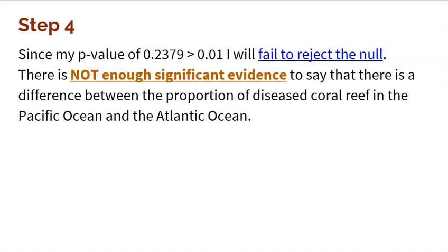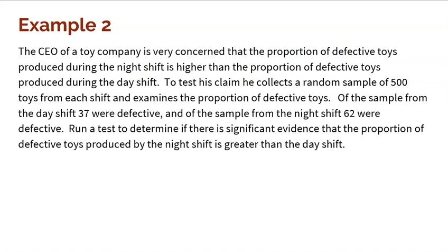Now we're going to move on to the second example. The CEO of a toy company is very concerned that the proportion of defective toys produced during the night shift is higher than the proportion of defective toys produced during the day shift. He gets 500 toys from each shift — day shift and night shift — random toys. From the day shift, 37 were defective. From the night shift, 62 were defective. Note: no significance level was given, so you can use either 1% or 5%.